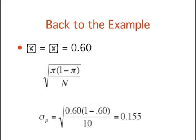Returning to the voter example, π equals 0.60, and therefore the mean of the sampling distribution of p is 0.60. The standard deviation is computed as shown. Note that the sample size, n, is 10.